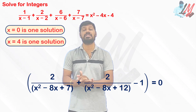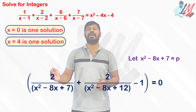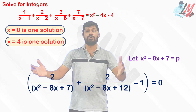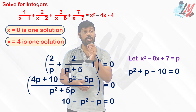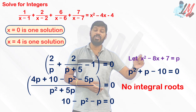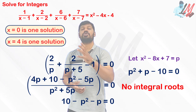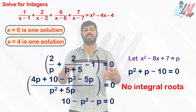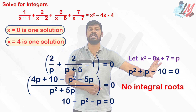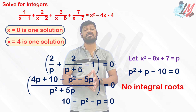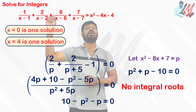For the remaining bracket equal to zero, let p = x²−8x+7 for computational convenience. Simplifying gives a quadratic equation in p. Solving this quadratic, you never get an integral root for p. Since p = x²−8x+7 yields no integral value for p, there is no integral value for x from this case either. Therefore, x = 0 and x = 4 are the only integral solutions of the given equation.